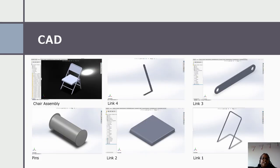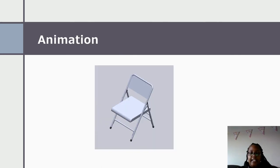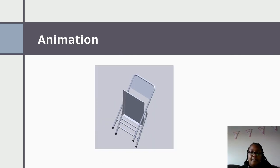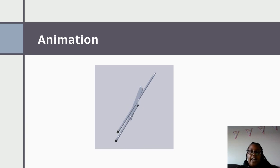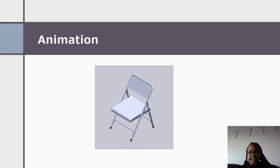As you can see here, we have the chair assembly — link four, link three, pins, link two which is the seat, and link one which is the back bar. Here is an animation that demonstrates how the chair goes from 60 degrees to 180 degrees.